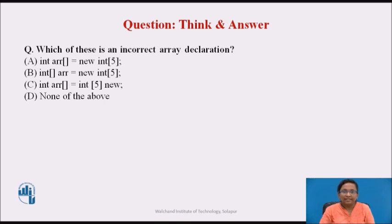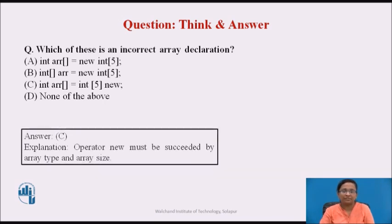Which of these is an incorrect array declaration? Options A and B use the new operator correctly — specifying the array data type and array size. But in option C, the new operator is not succeeded by the array type and array size. Hence the correct answer is option C.